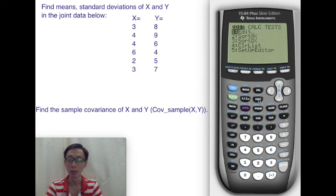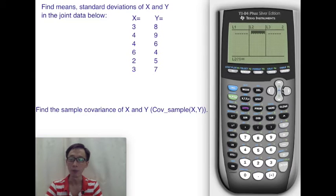First of all, we enter again the same thing using stat edit to enter the data for x and y. So we are just going to quickly enter x, 3, 4, 4, and then 6, 2, 3 into the first list. And then for the second list, we will use 8, 9, 6 and 4, 5, 7. That's it.